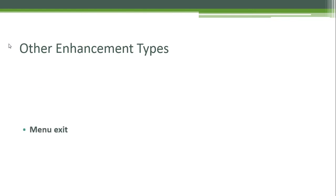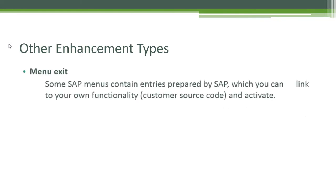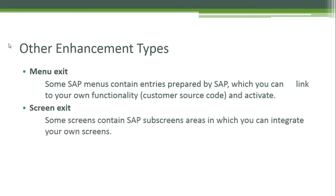Now let's talk about other enhancement types. We have menu exits — some SAP menus contain entries prepared by SAP which you can link to your own functionality, your own customer source code, and activate. You also have screen exits — some screens contain sub-screen areas in which you can integrate your own screens.